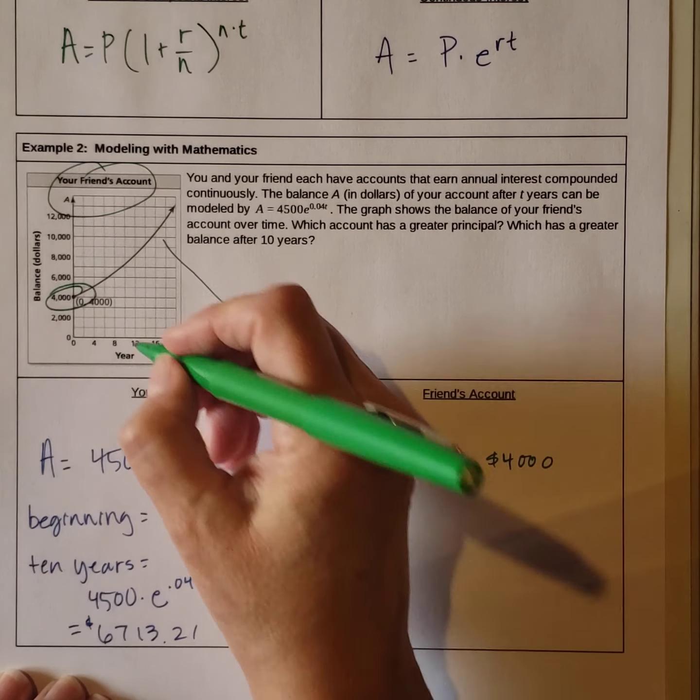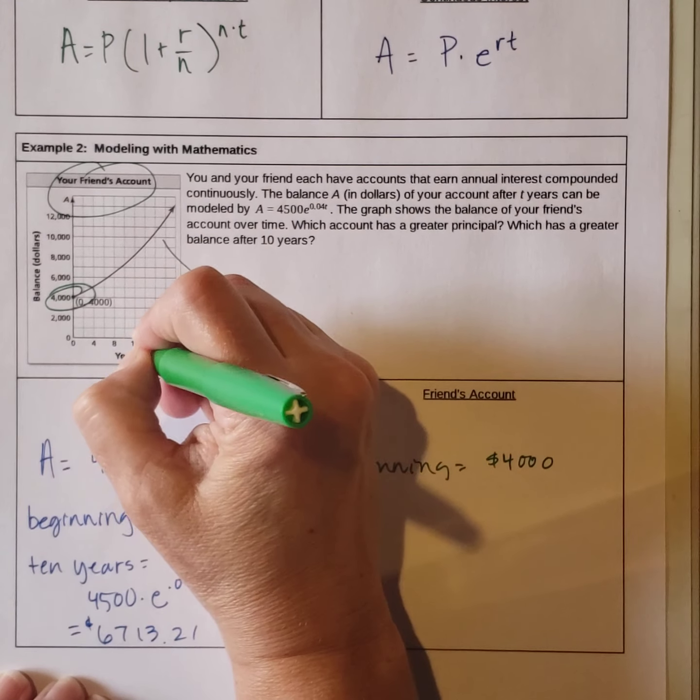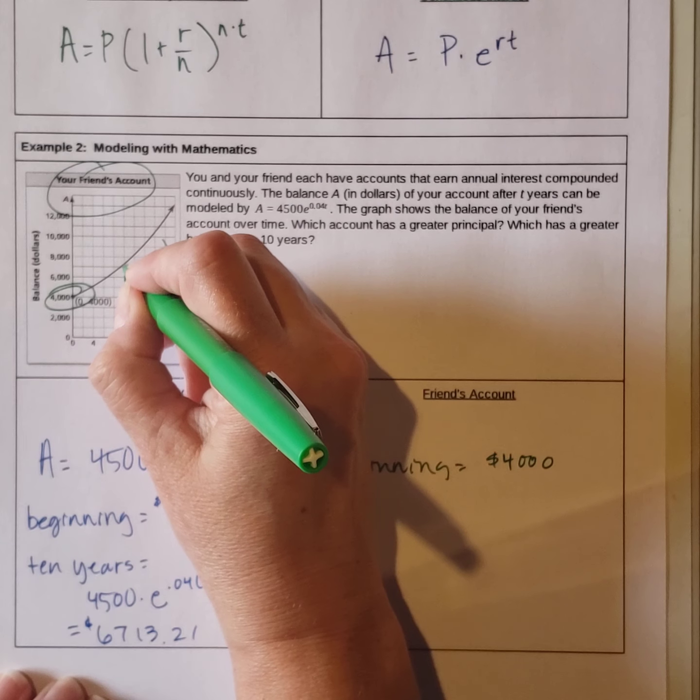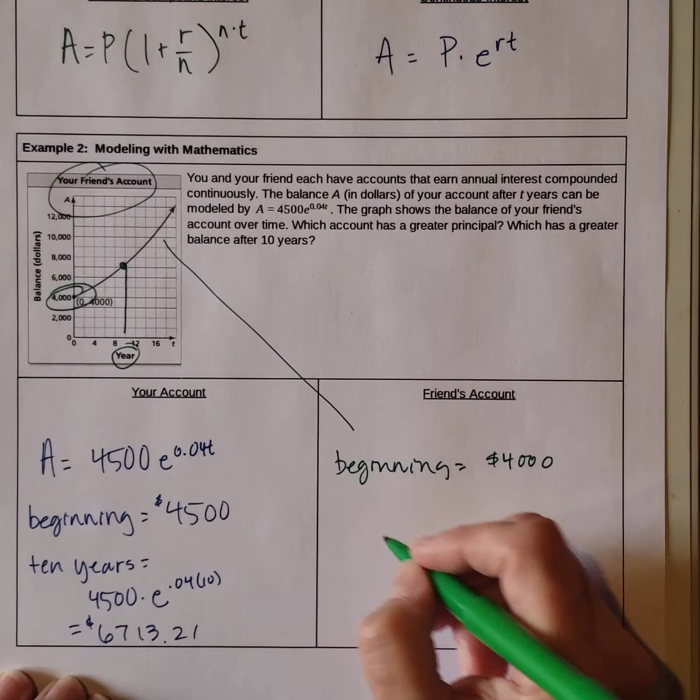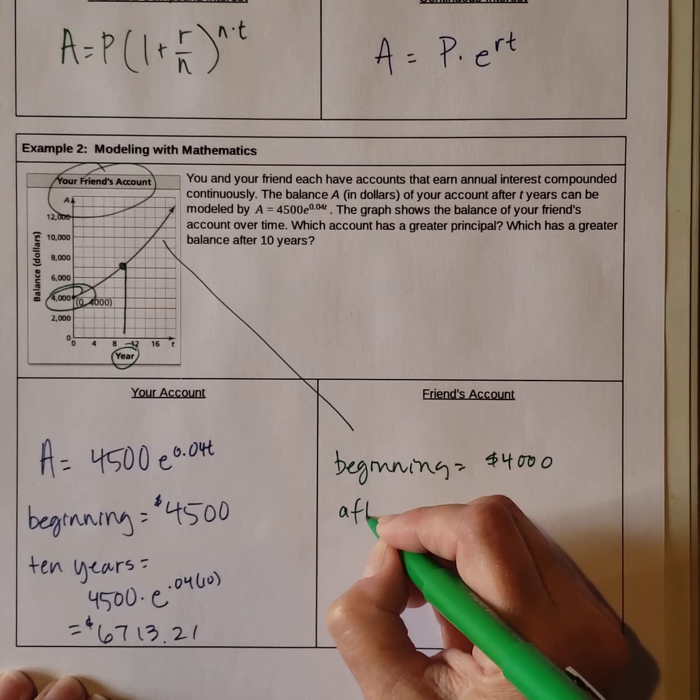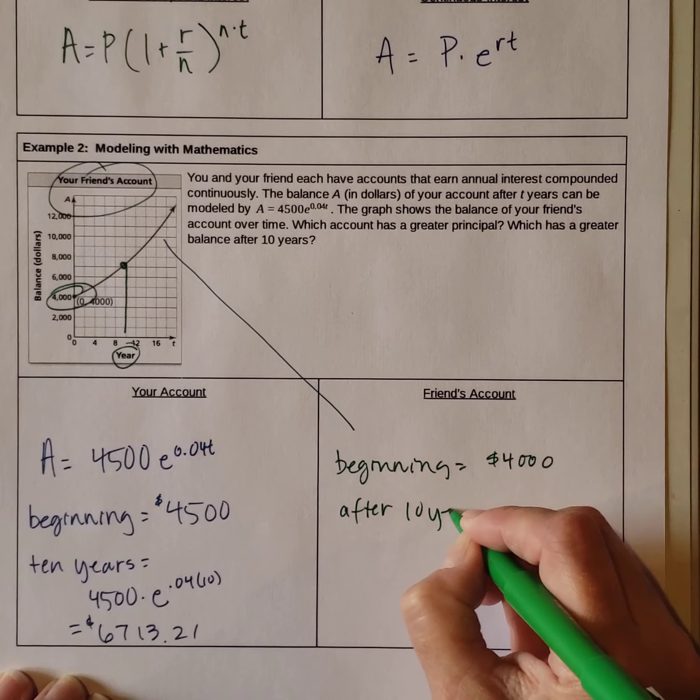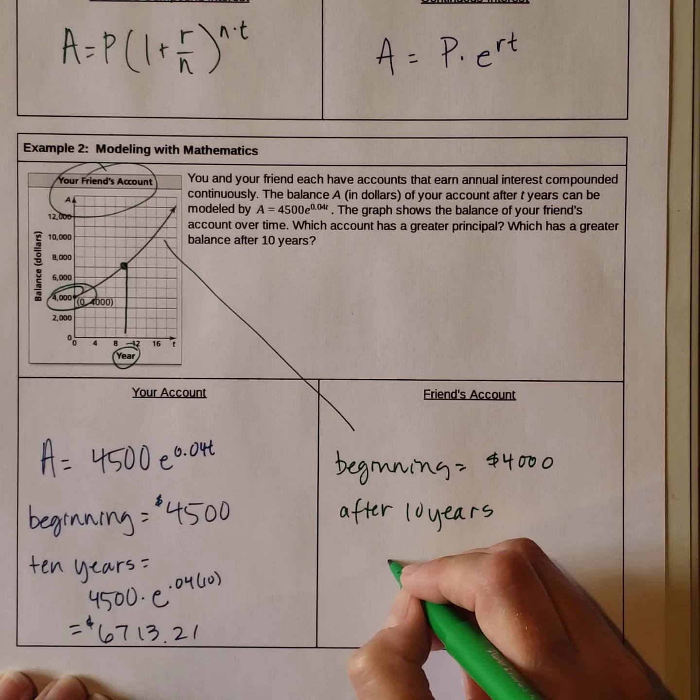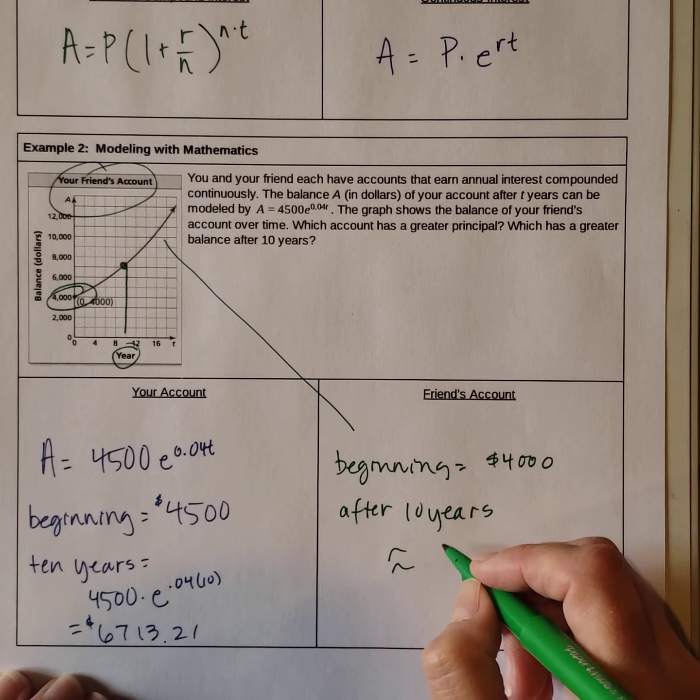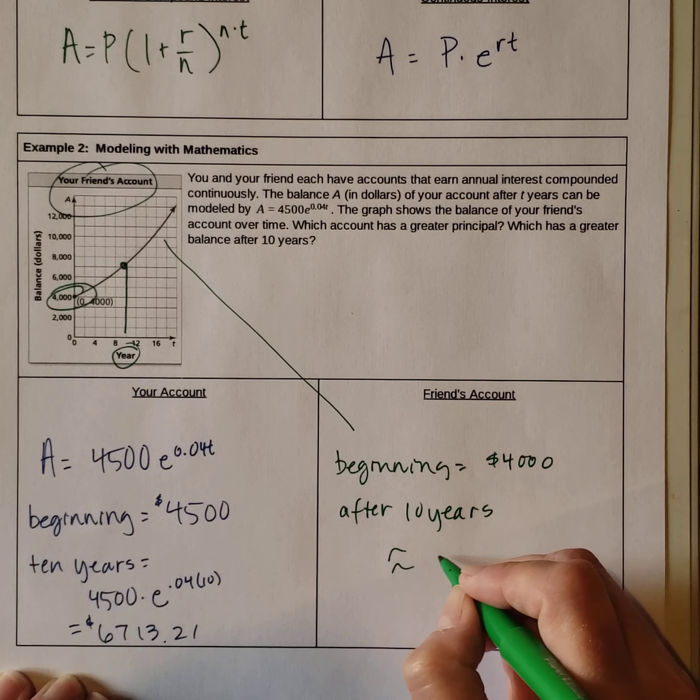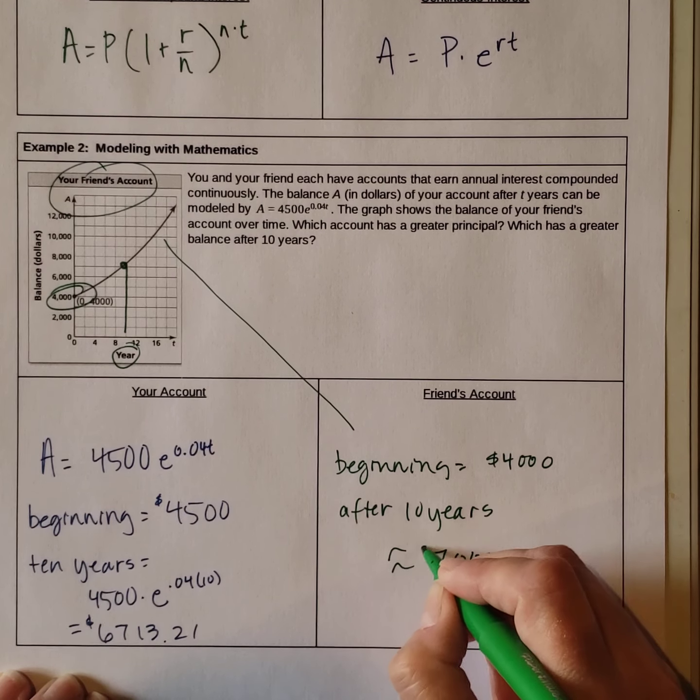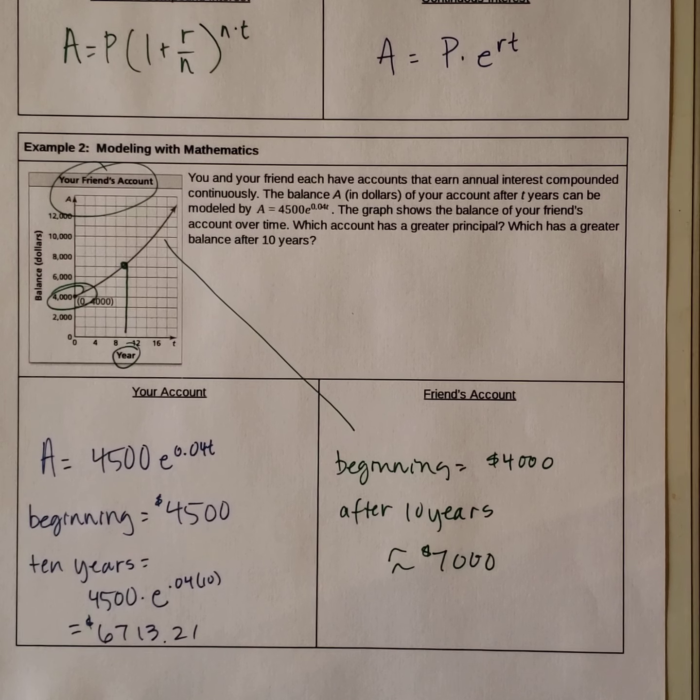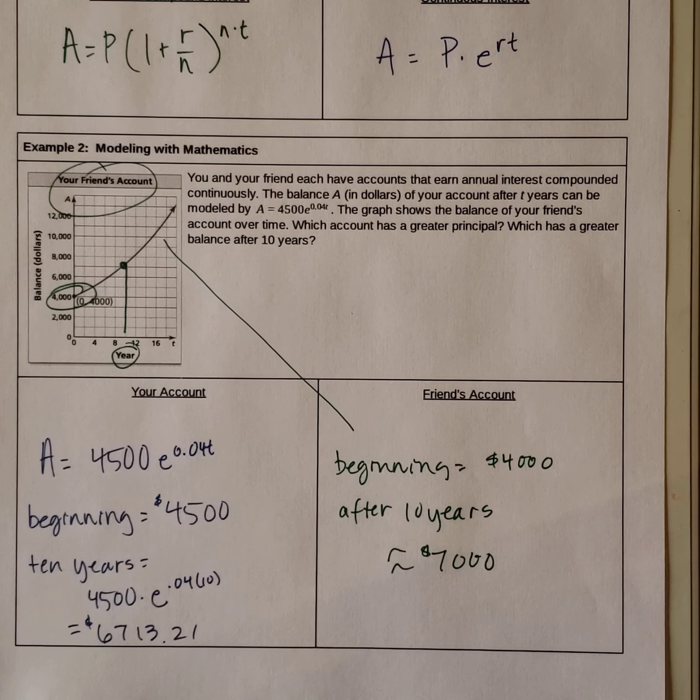And then after 10 years, we need to look at the years. Go up here. And it looks like after 10 years, the value of your friend's account is approximately a little bit more than $7,000. So on comparing the two, your friend gets more.